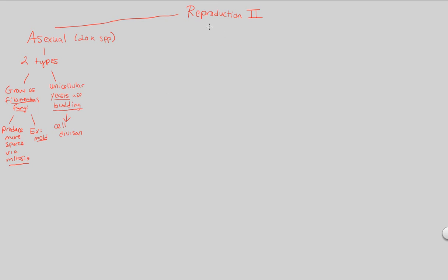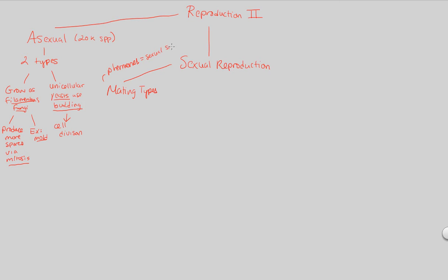Now a great focus is the sexual reproduction, which is going to be about seven or eight steps to understand. First and foremost, in order to understand sexual reproduction in fungi, we need to understand mating types. Mating types utilize pheromones — pheromones are sexual signaling molecules. They indicate that sexual reproduction should be happening and will happen if pheromones are being released.